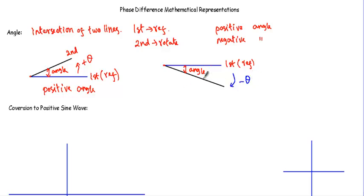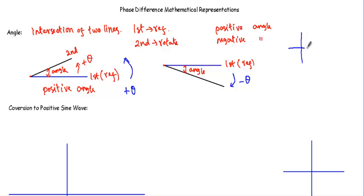A negative angle is created by rotating in the clockwise direction around the reference axis. So if we rotate in counter-clockwise direction, the produced angle will be positive, and if we rotate in clockwise direction, the angle is negative. We use this concept in the four-quadrant coordinate system.